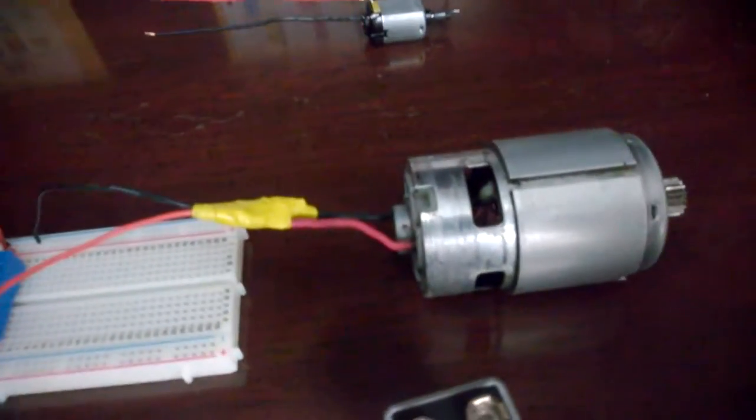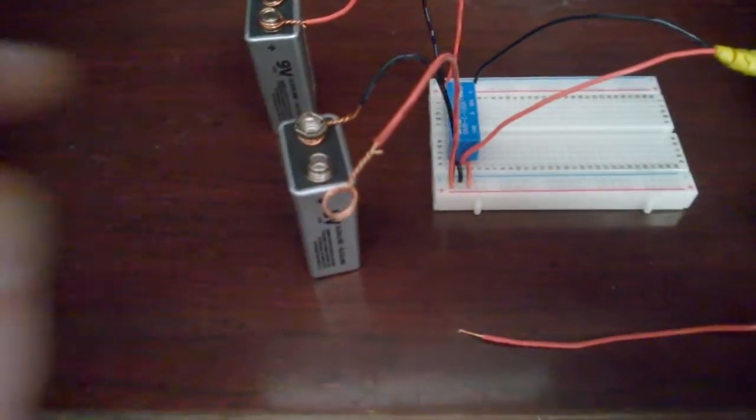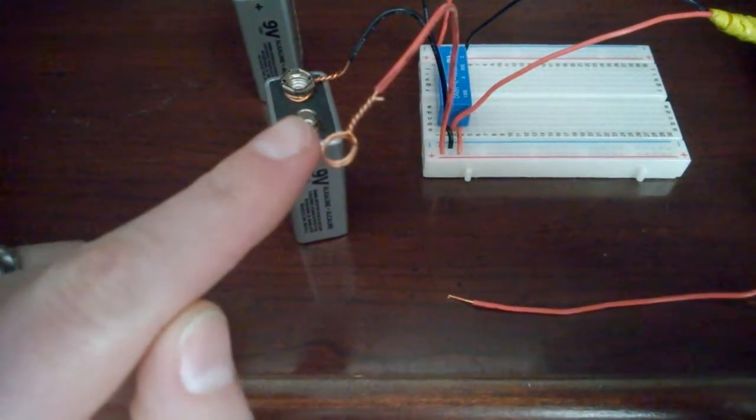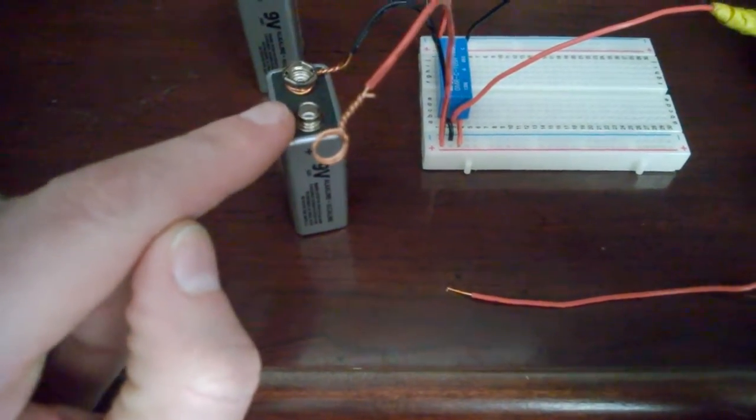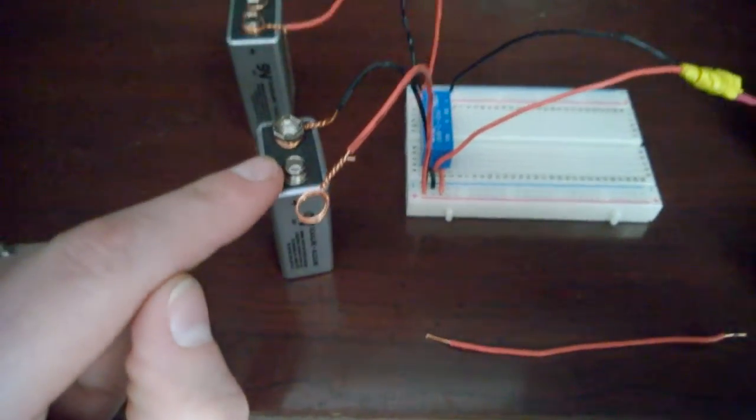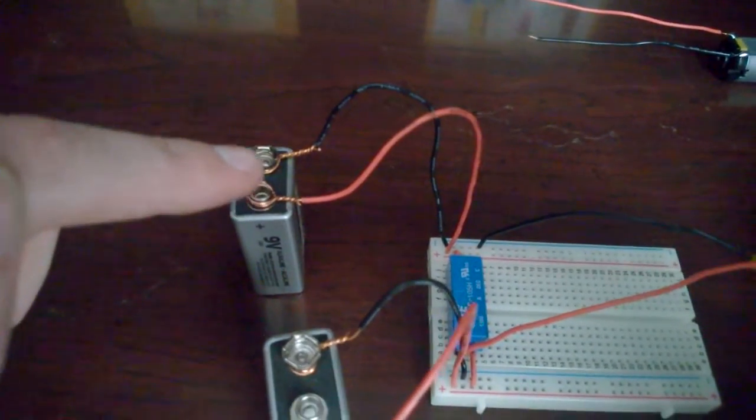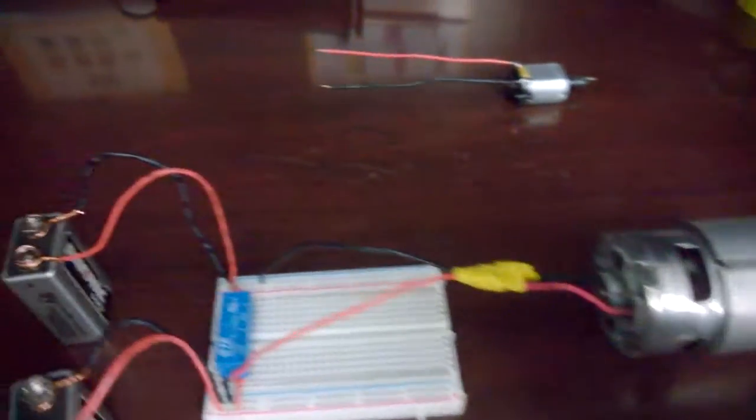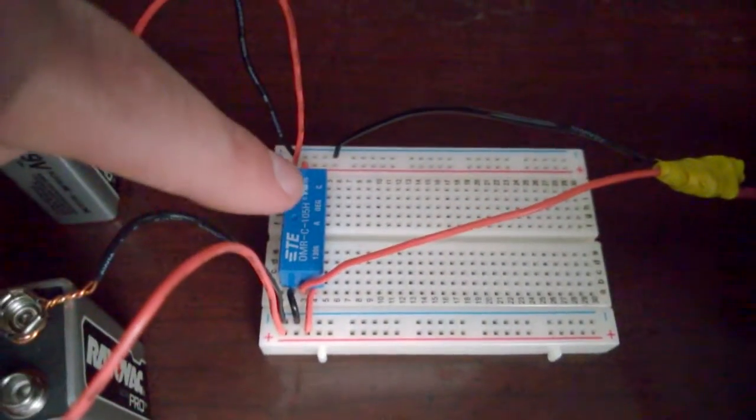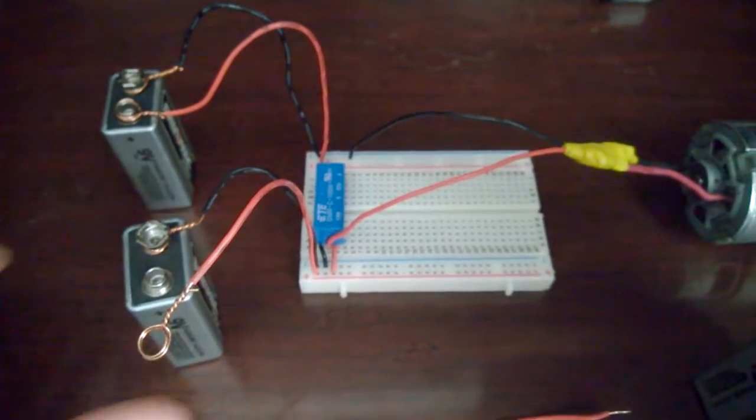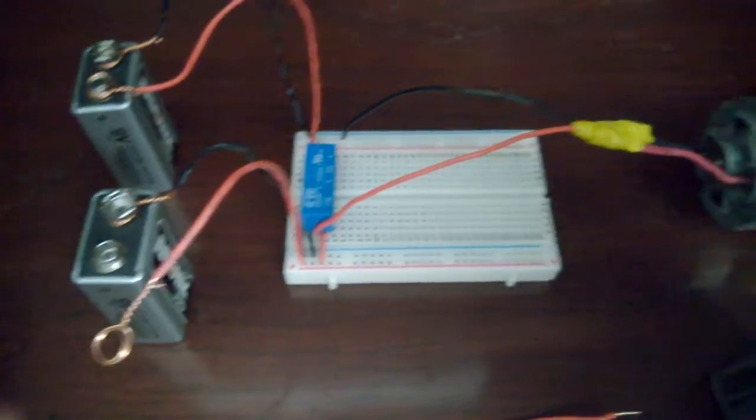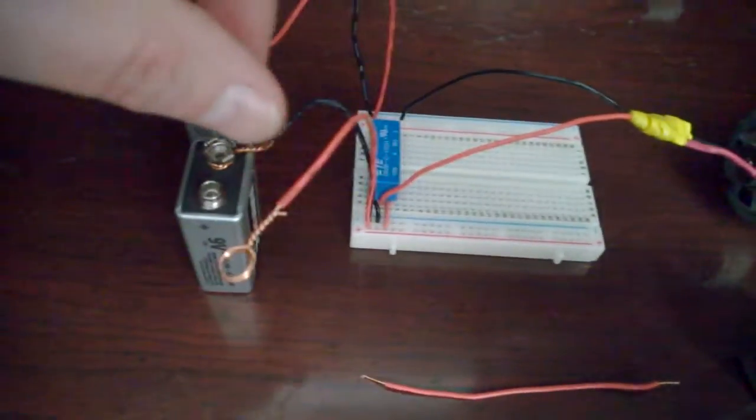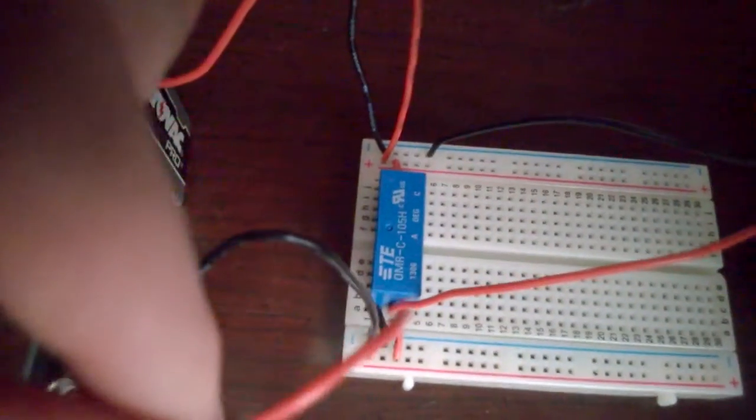This large motor will turn on if I connect this positive lead to the positive side of the battery. This power source here is constantly connected to the motor. It's just this little blue thing that's keeping the whole thing from not moving. But once I put this on here, the little blue thing is going to connect the motor to its very own battery.